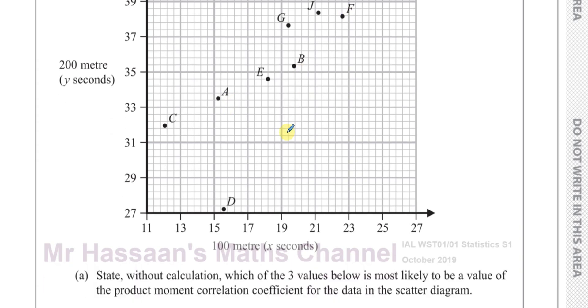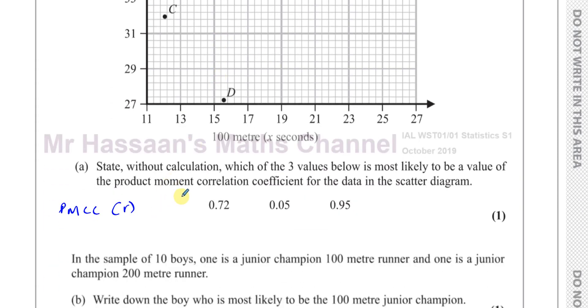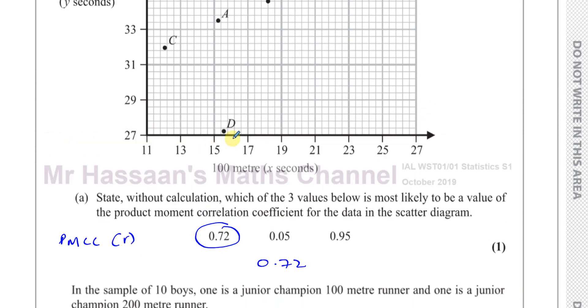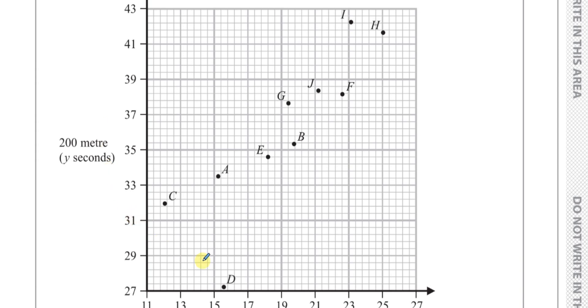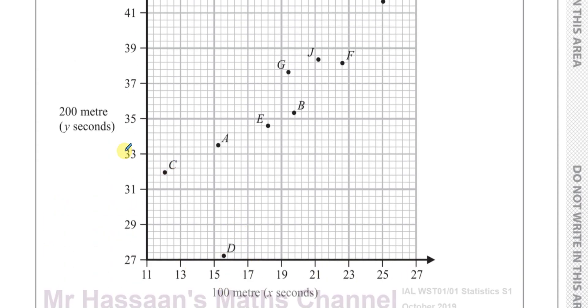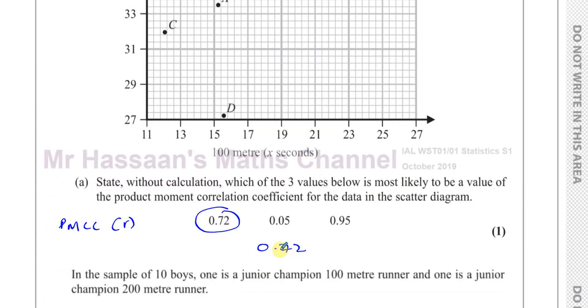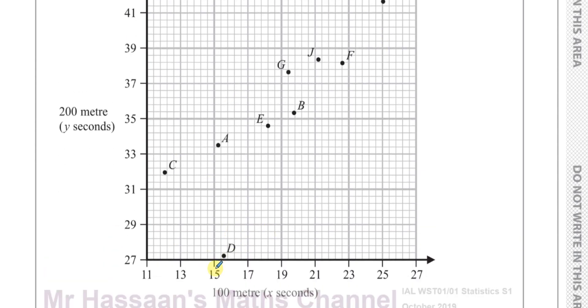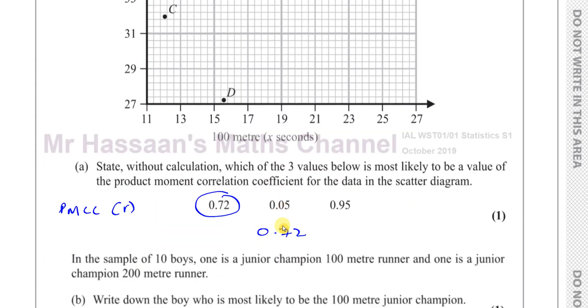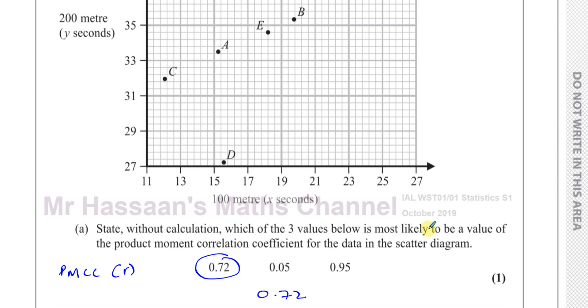So I guess if that D wasn't there, it would be quite close to the straight line. But that D is like an outlier you could say. So that would cause the value of the PMCC to be a bit lower. So I'm going to choose 0.72. 0.05 would mean there's no correlation basically, like there would be all over the place. Here we can see there's some sort of pattern. As the person is slower in the 100 meters, they're also slower in the 200 meters. So you can see that as the time increases for the 100 meters, the time also increases for the 200 meters. There's definitely positive correlation here. But it's quite strong without this point here. But with this point included, it's not going to be so strong. So we can say here that 0.72 looks like the correct value.